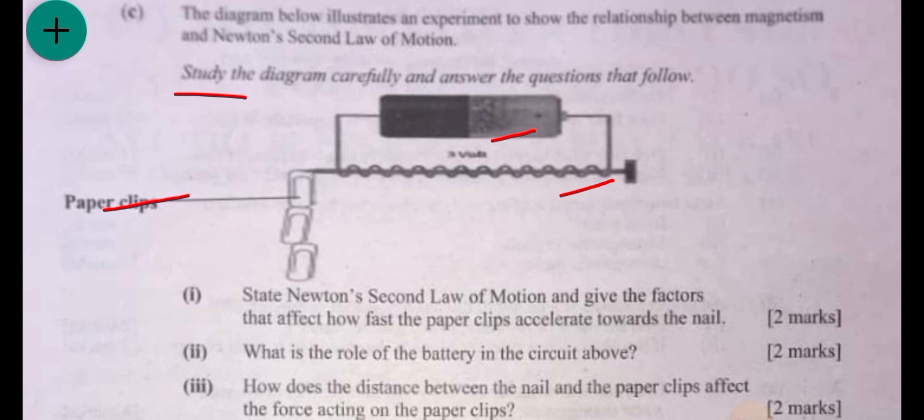This demonstrates electromagnetism. The first question says state Newton's second law of motion and give the factors that affect how fast the paperclips accelerate towards the nail. Newton's second law states that the acceleration of a body is directly proportional to the net force and inversely proportional to the mass. That's where you get F equals MA.